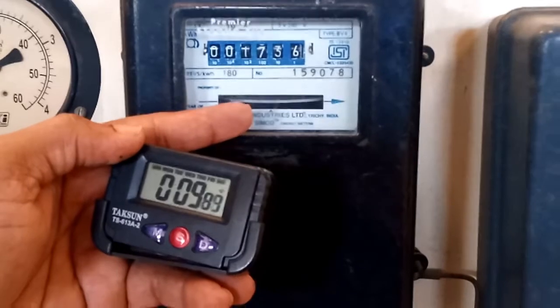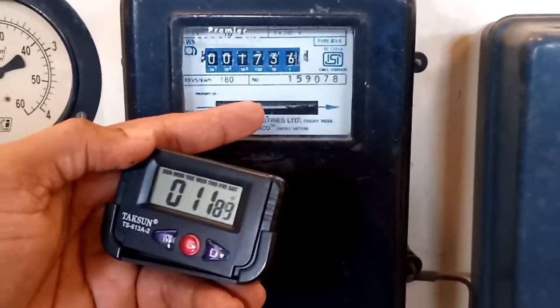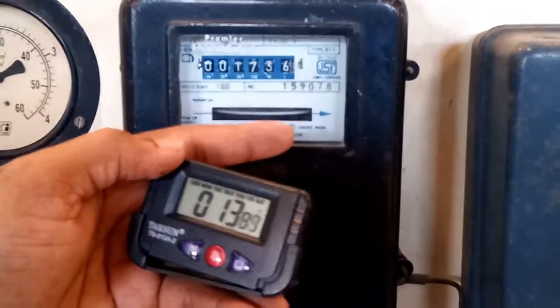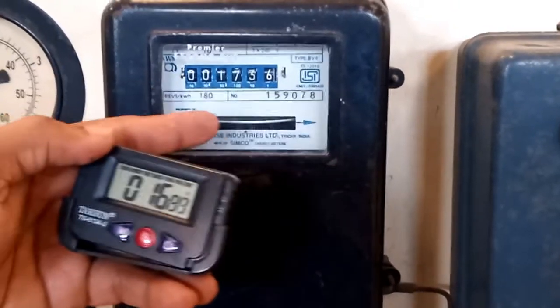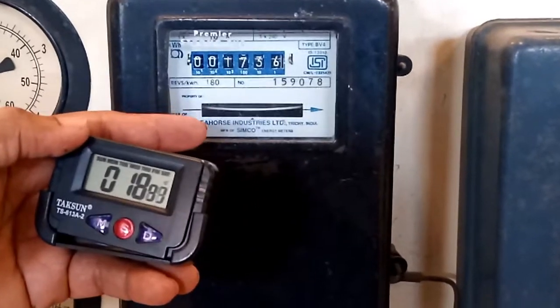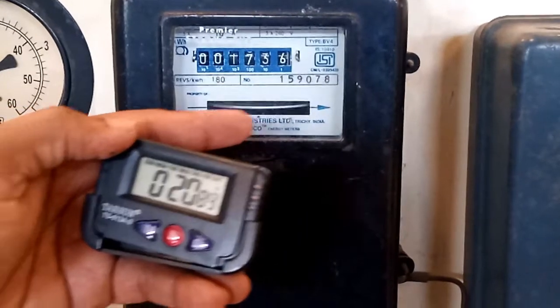This black marker indicates the starting point. When it comes to the starting point, that's one revolution. Like that, measure three revolutions.